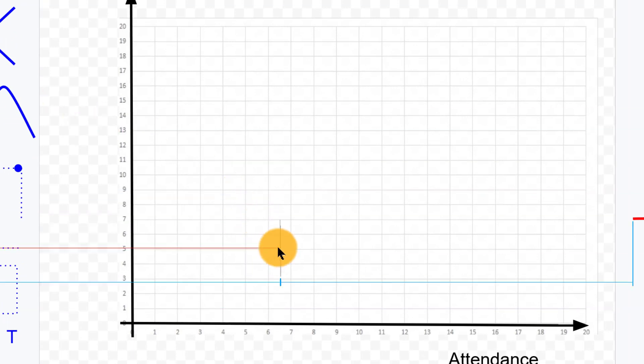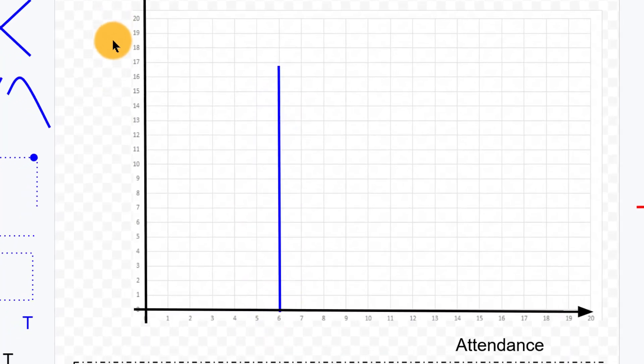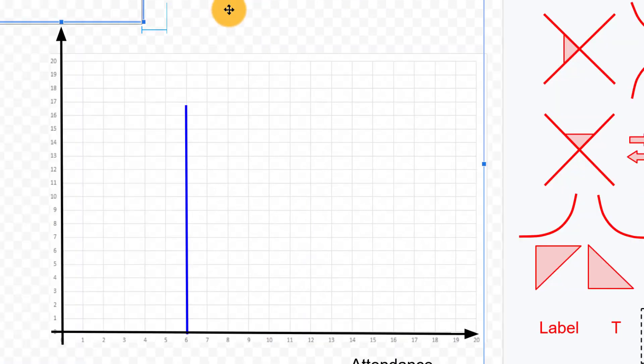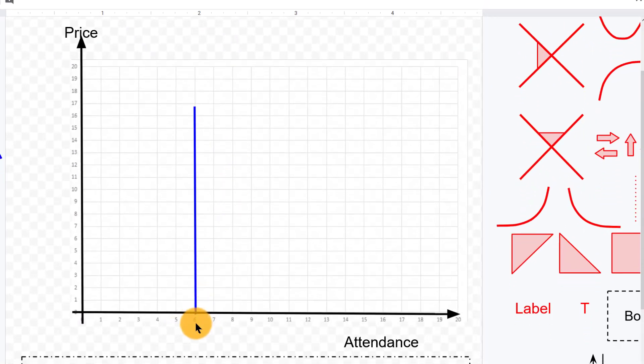What about this vertical line? Let's see. Let's just plop it down, say somewhere like this, going straight up and down. What this would suggest is no matter what price we choose, let me move this label down a little bit here. No matter what price we choose, six or maybe this is 6,000 people are going to attend the concert. That might not make sense either.